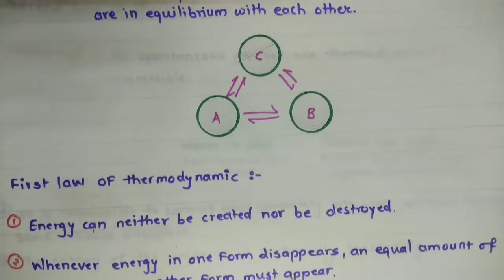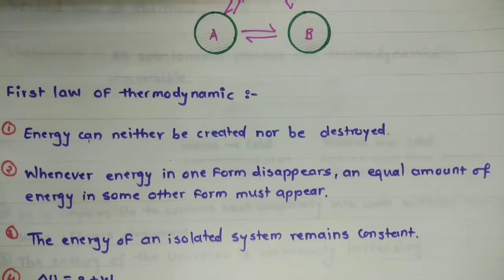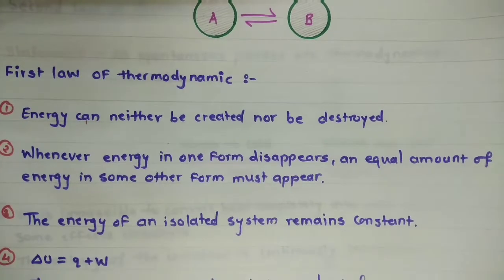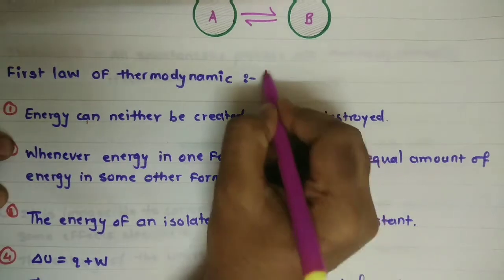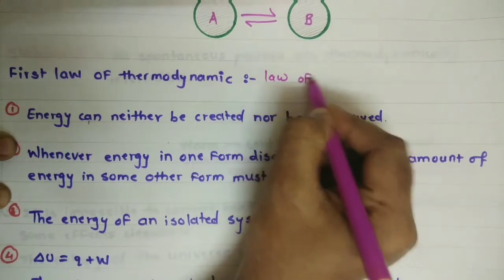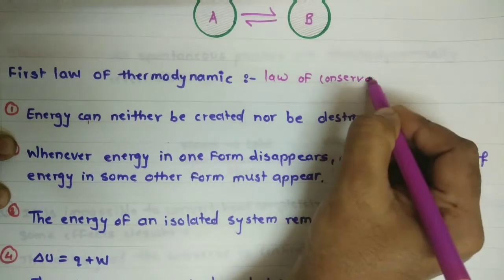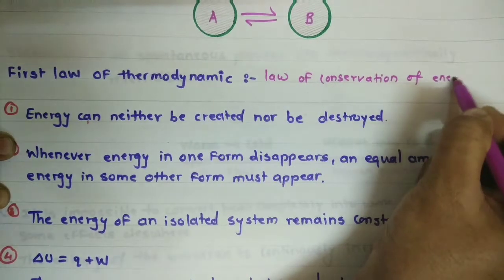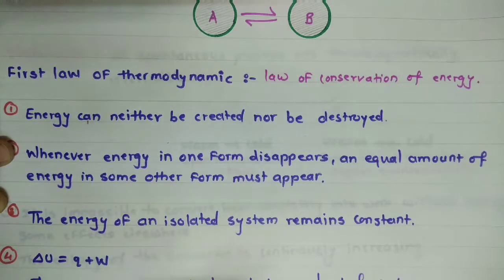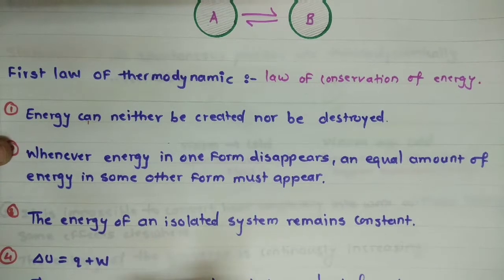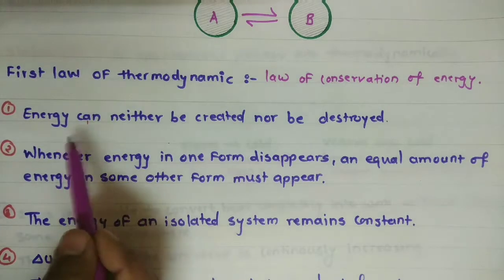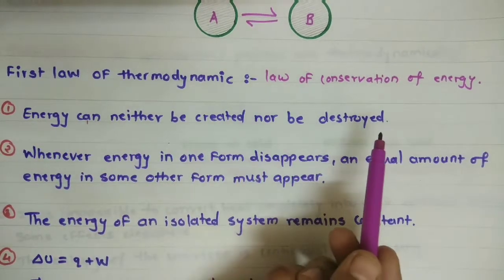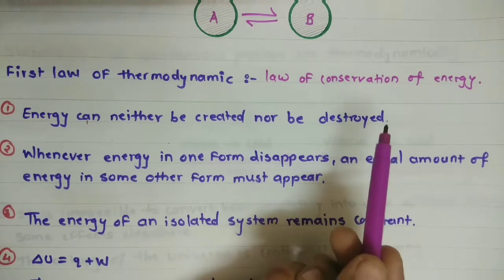After understanding the zeroth law of thermodynamics, we move towards the next law, which is the first law of thermodynamics. The first law of thermodynamics is also known as the law of conservation of energy. The first and very famous statement for the first law of thermodynamics is: energy can neither be created nor be destroyed.